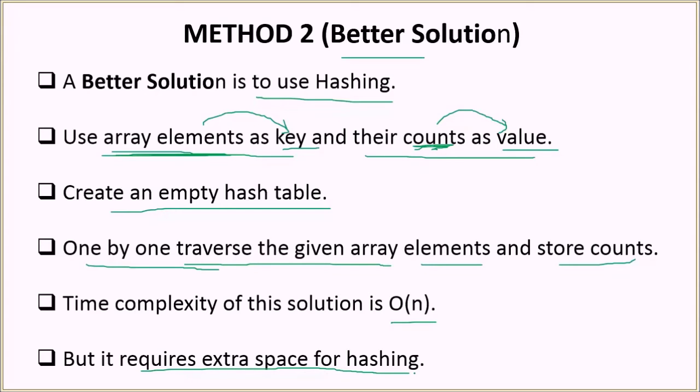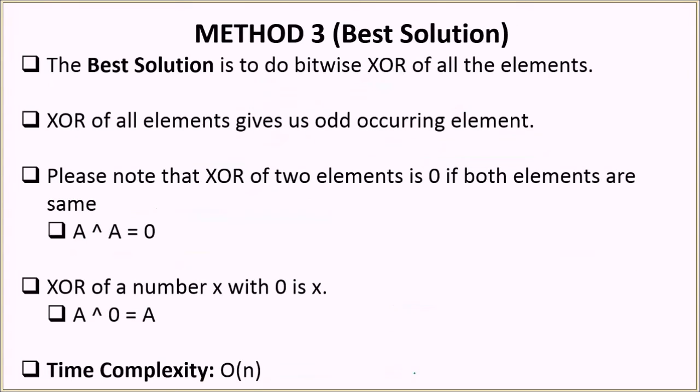So there is another solution where we will not require extra space. So we call this the best solution. In this best solution, we'll basically use XOR operator, the bitwise XOR. So let's see how we can do that. We'll basically do an XOR of all the elements. And in the end, it will give us the odd occurring, the element which is occurring odd number of times. So let's see how it does that and why it does that basically.